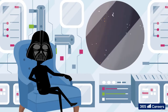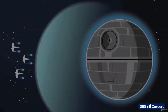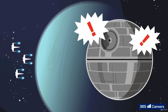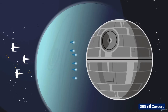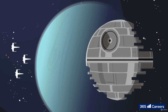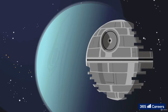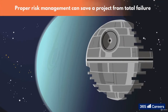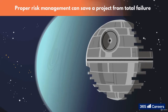However, old Darthie didn't assume that some tiny little X-Wings could attack the planet-sized Death Star and blow it up. How wrong he was. This goes to show that proper risk management can not only make a project more efficient by eliminating delays, it can even save a project from total failure.